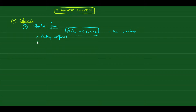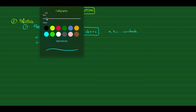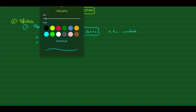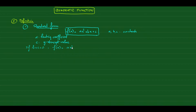The c value is called the y-intercept value. Now just imagine: what if b and c both equal zero? Then the function becomes f(x) = x² only. Is this still called a quadratic function? Yes, because the highest degree is still the second degree, even though it doesn't have the second or third term. So this is still called a quadratic function.